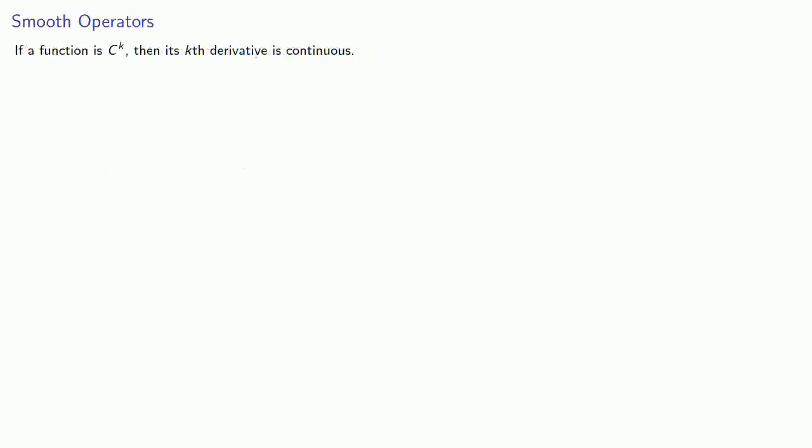Now if a function is C^k, then its kth derivative is continuous. So the only thing preventing it from being C^(k+1) is a point of non-differentiability.